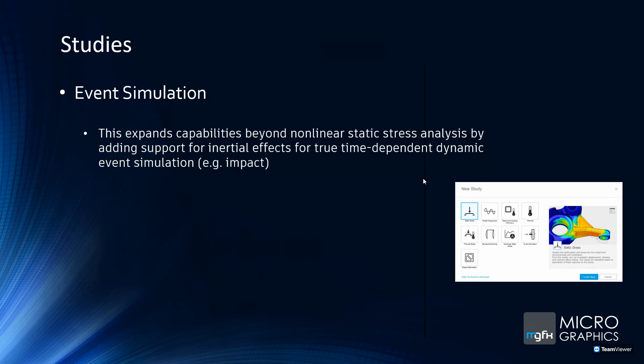Then there's event simulation. All the other studies run on the NASTRAN solver, but event simulation uses a different solver. For instance, if you have a 10-pound hammer hitting a brick, you can actually simulate that brick breaking — your model will break in half. Every other study runs on your PC, but event simulation will not — I'd advise against it anyway due to the large amount of computing power required.